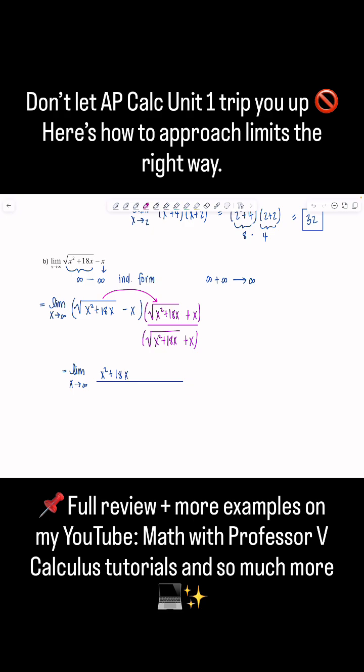So I'll have x squared plus 18x. Outer and inner products will cancel. And then I just have minus x squared left in the numerator. And then we've got all this square root x squared plus 18x plus x in the denominator.